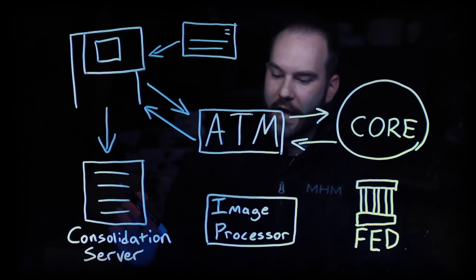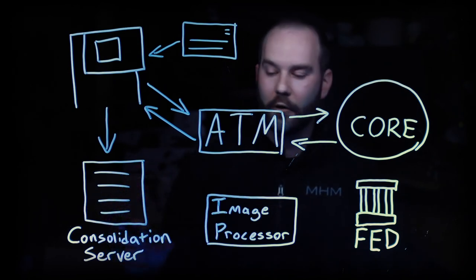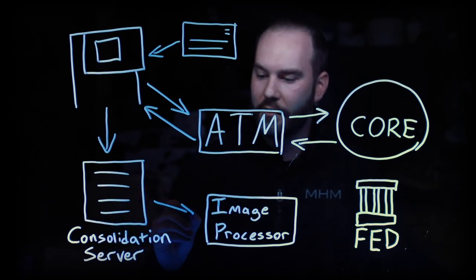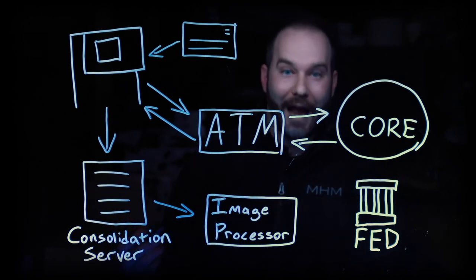This is where it can take that XML data and convert it into the proper X9.37 file or whatever's necessary for your image processor and send that to your image processor as if the check had been deposited and scanned at the branch.